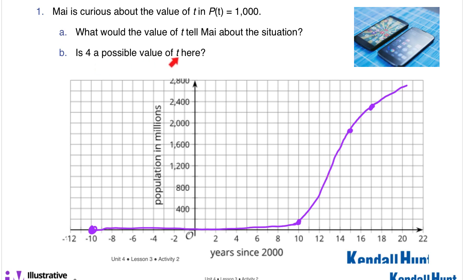Is 4 a possible value of t here? Well, not in this case, because at 4, it definitely does not look like we're going to be at a billion people having a cell phone.